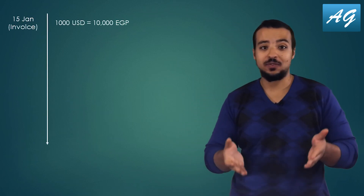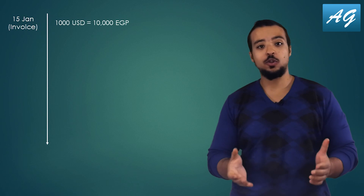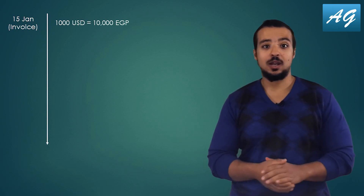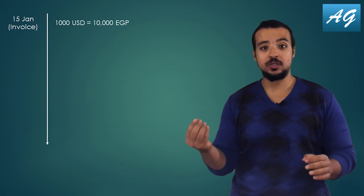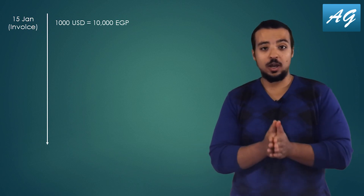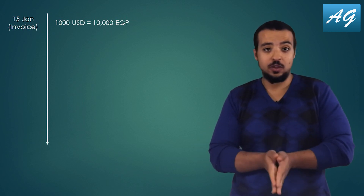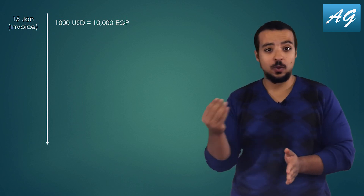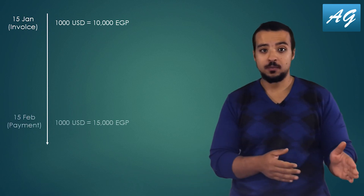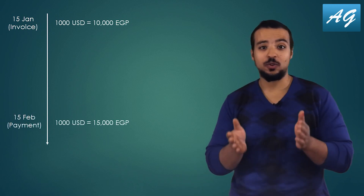Let's assume that today is the 15th of January and I'm going to buy some products from my US supplier for 1,000 USD. For example, let's assume that 1 USD is equal to 10 Egyptian pounds. When I record the invoice today on the 15th of January, I'm going to record an invoice for 1,000 USD and 10,000 Egyptian pounds.